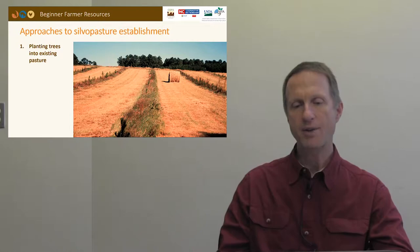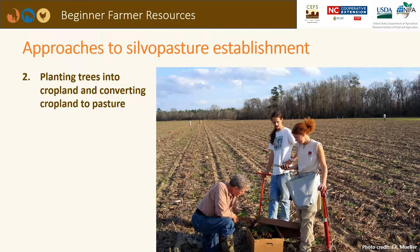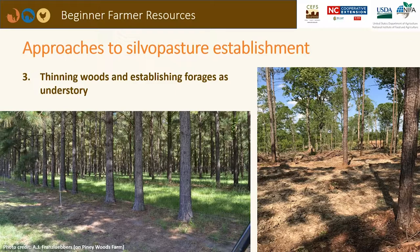How do we establish a silvopasture? There are several options. One can plant trees into an existing pasture — most ideally into a hay land so animals aren't grazing on the trees, which would increase fencing costs. One can also plant trees into cropland and convert that cropland into a pasture, as done at the Centre for Environmental Farming Systems in Goldsboro. The most common option is thinning existing timberlands and establishing forages underneath, making sure there is enough sunlight entering the system to accommodate the forages being planted.